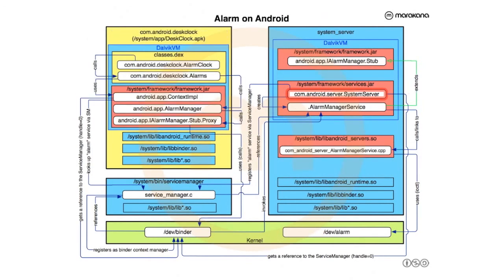Let's move on — alarms. This is how I got here this morning. I use the desk clock APK, which is a system application to schedule an alarm. On the right-hand side we have a system server that instantiates an alarm manager service. The alarm manager service is linked to alarm_manager_service.cpp, which we'll talk about later. On the other side, we have the desk clock, which has internally some activity called AlarmClock that uses static functions implemented in alarms.java.